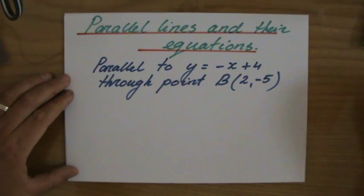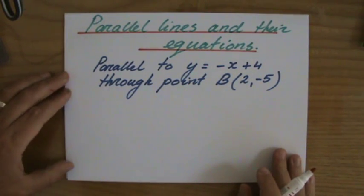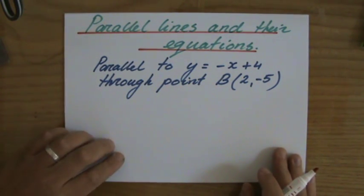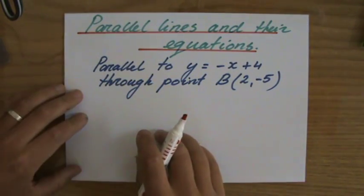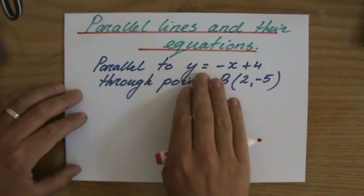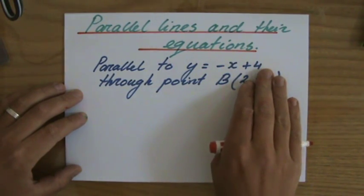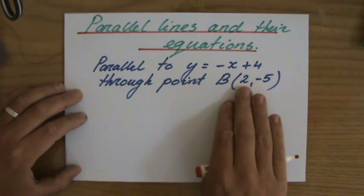Alright, well done. I hope you've tried that and you were successful and confident about your solution. Let's have a look. I have to create the line which is parallel to y equals minus x plus 4 and goes through point B(2, -5).